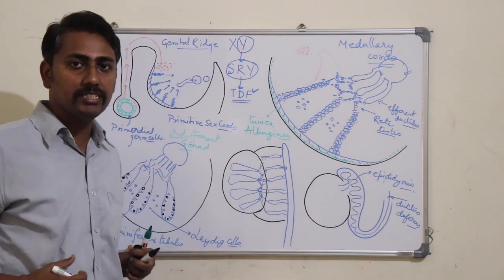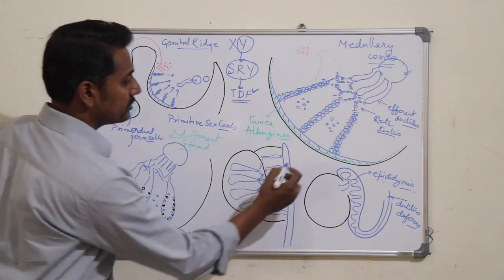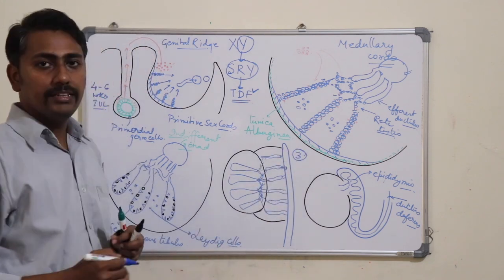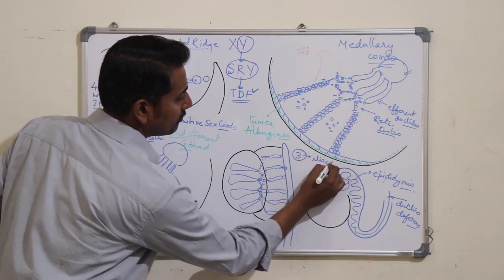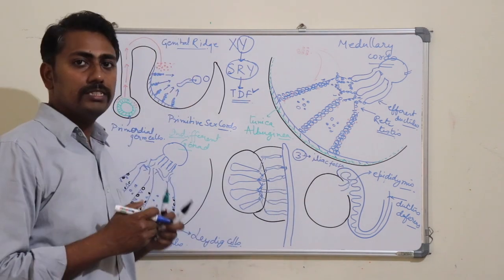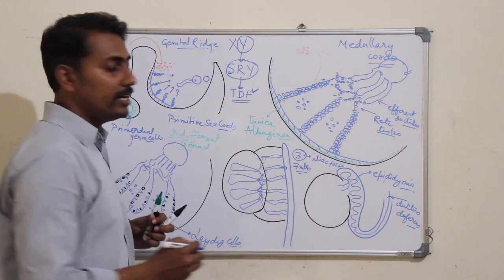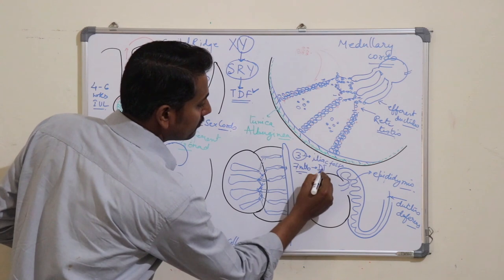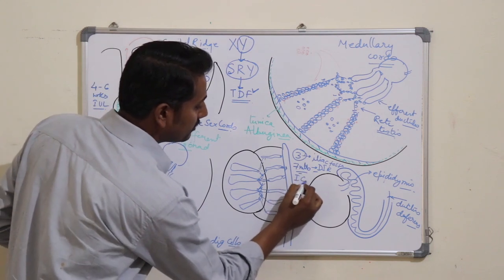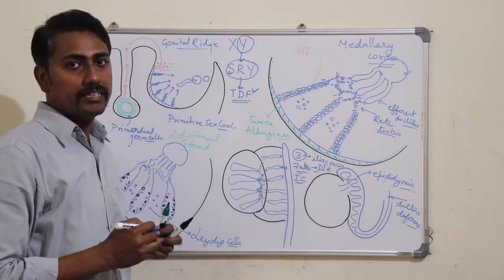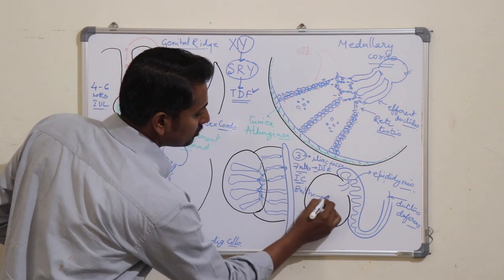As the testes are formed in the lumbar region, they descend to the scrotum. At about 3 months, the testes appear in the iliac fossa. At the start of the 7th month, they reach the deep inguinal ring. During the 7th month, they traverse the inguinal canal and reach the scrotum at the end of the 8th month.